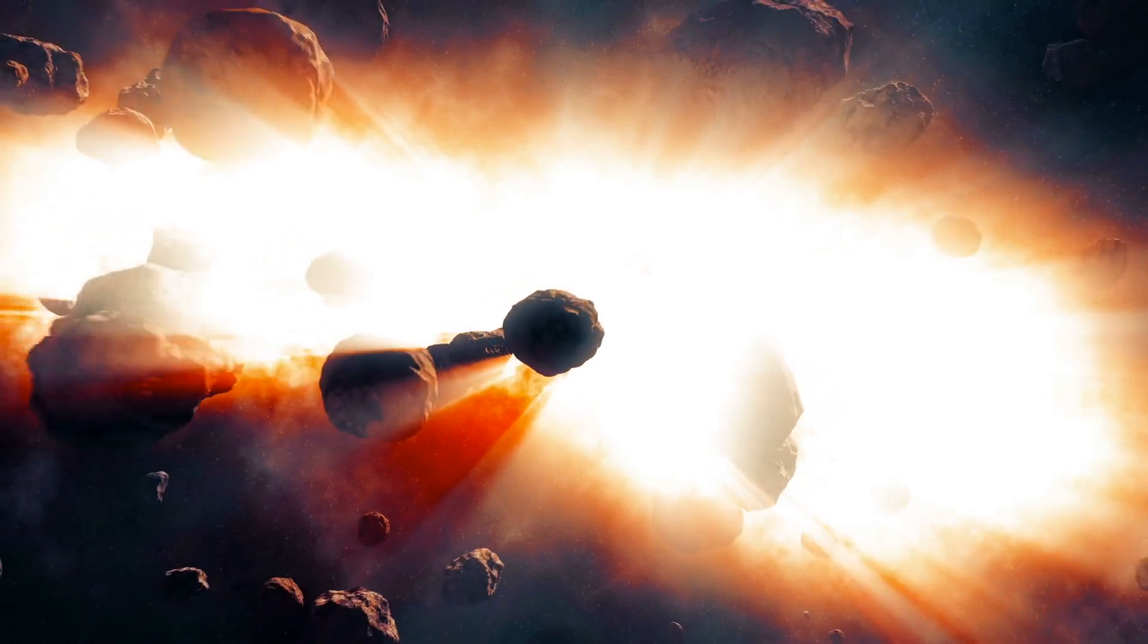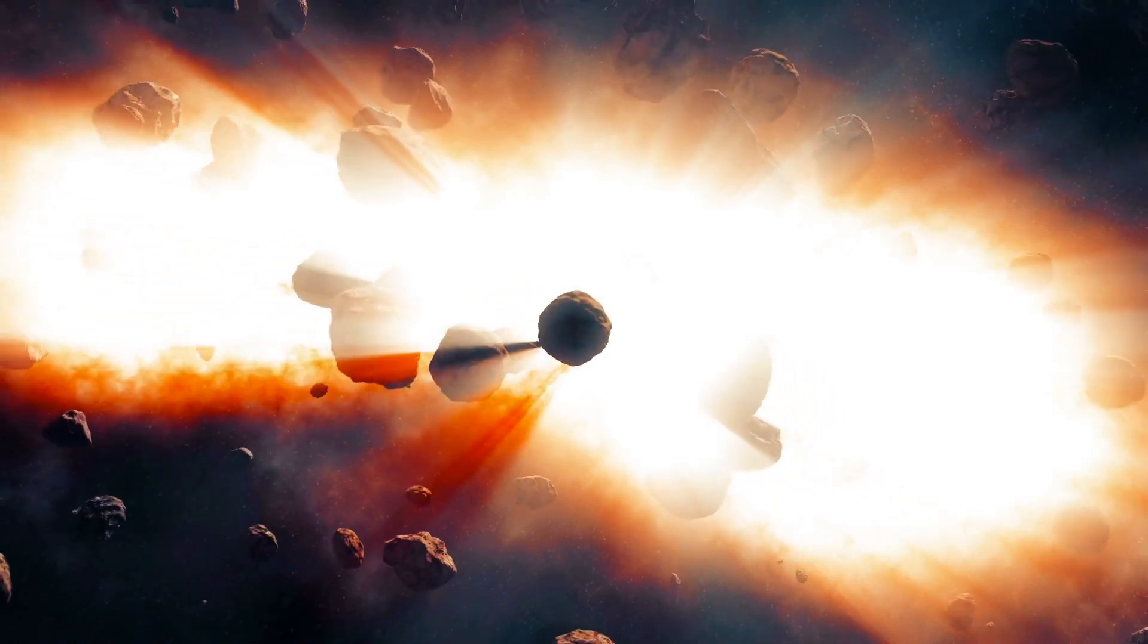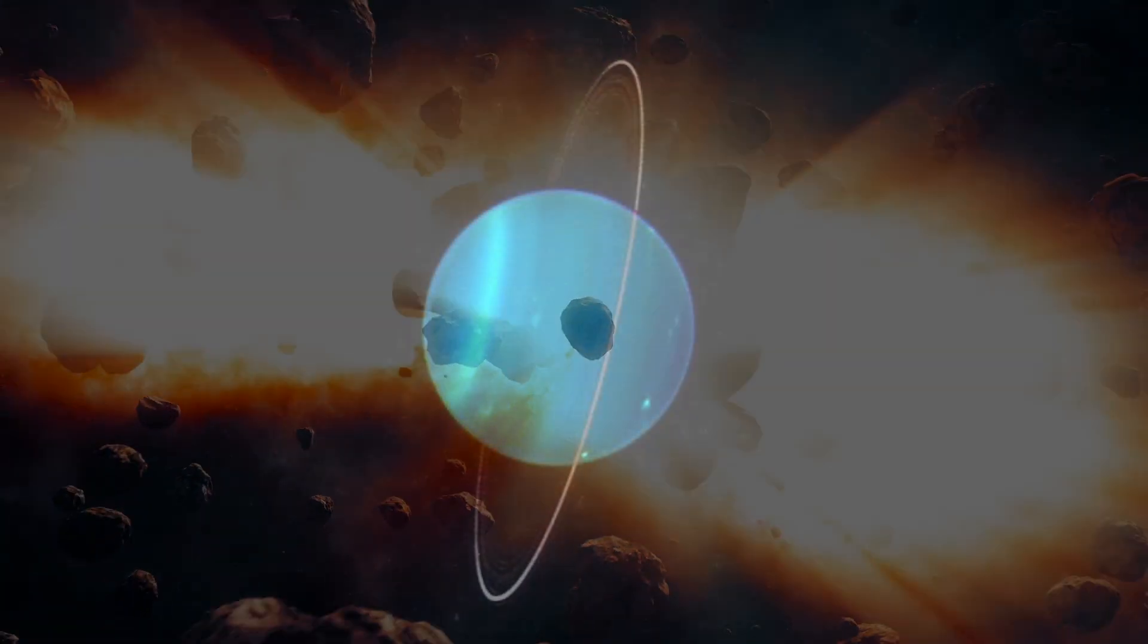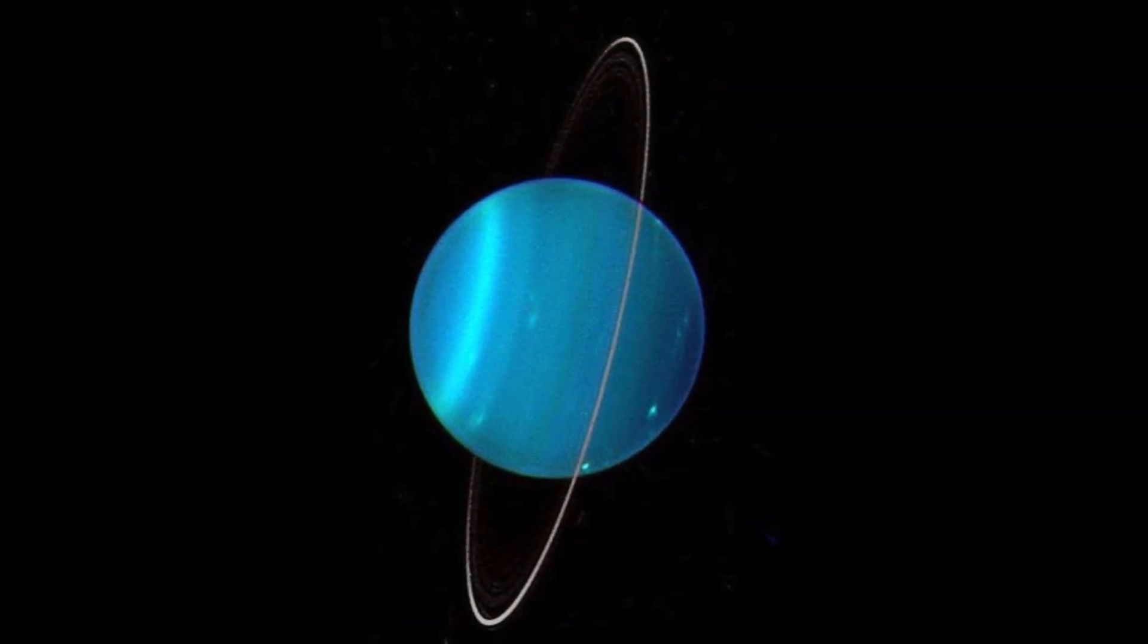A possible explanation for this would be, for example, a collision with another celestial body, which could have caused Uranus to be thrown out of its ancestral orbit.